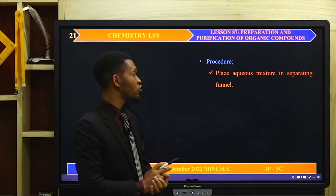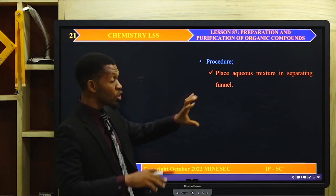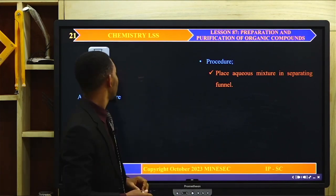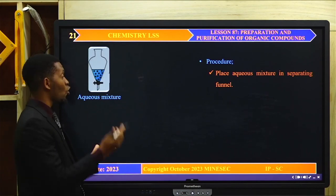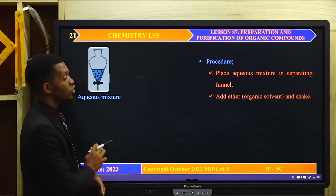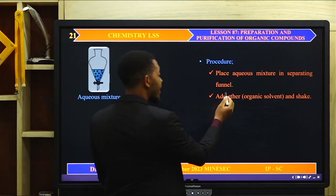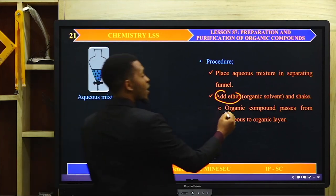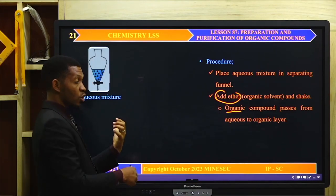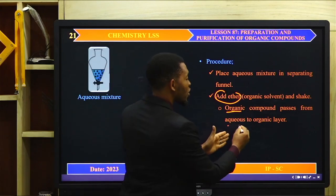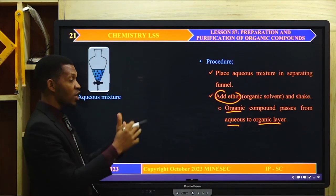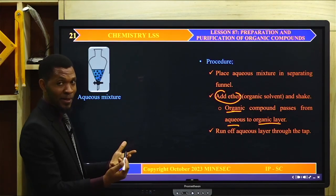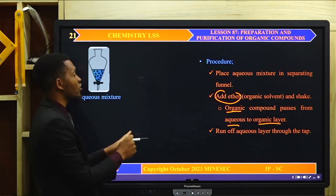The procedure for solvent extraction: we place the aqueous mixture — that is, the organic compound dissolved in water — in a separating funnel. We then add an organic solvent, such as ether, and shake the mixture. As we shake, the organic compound, which is more soluble in the organic solvent than the aqueous solvent, will move from the aqueous layer to the organic layer. We then run off the aqueous layer through the tap, leaving our organic compound dissolved in the organic solvent.